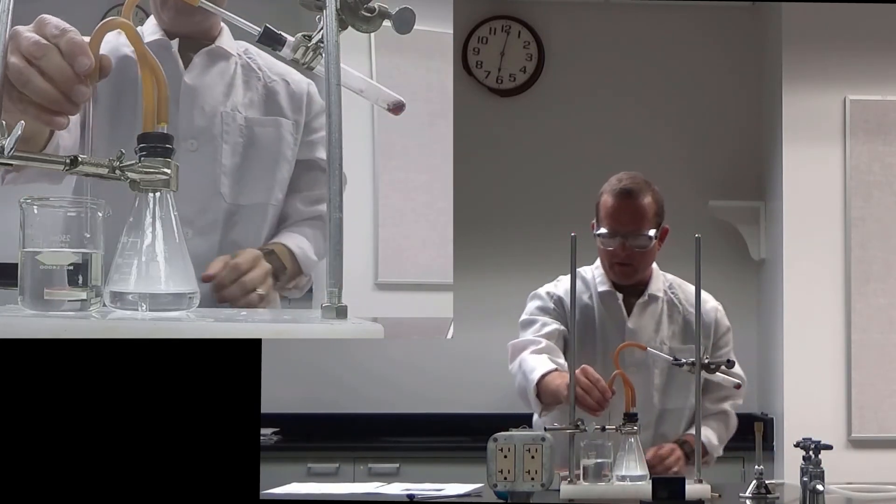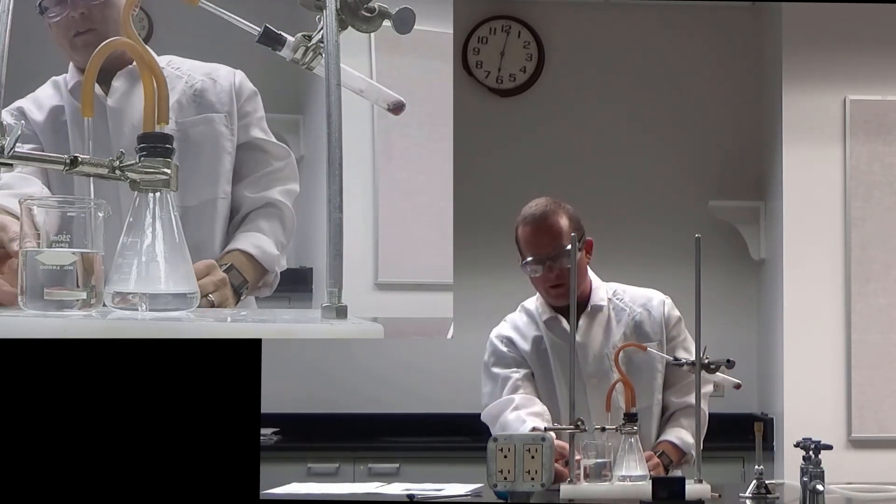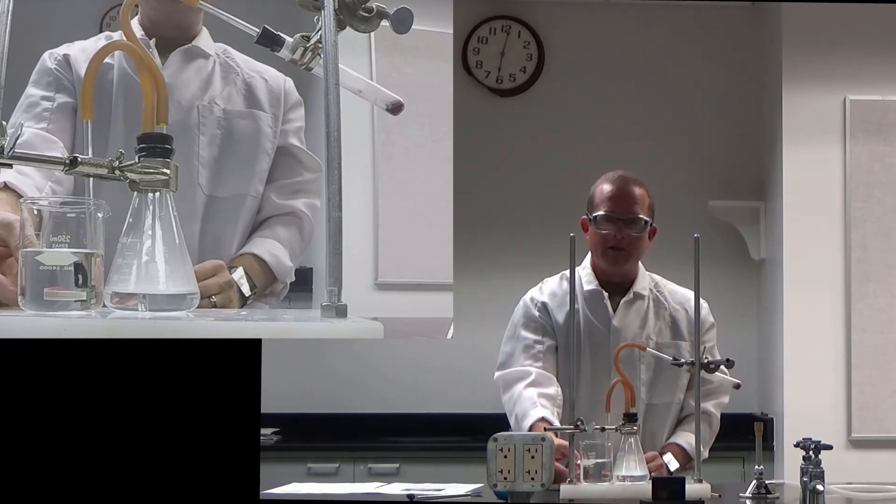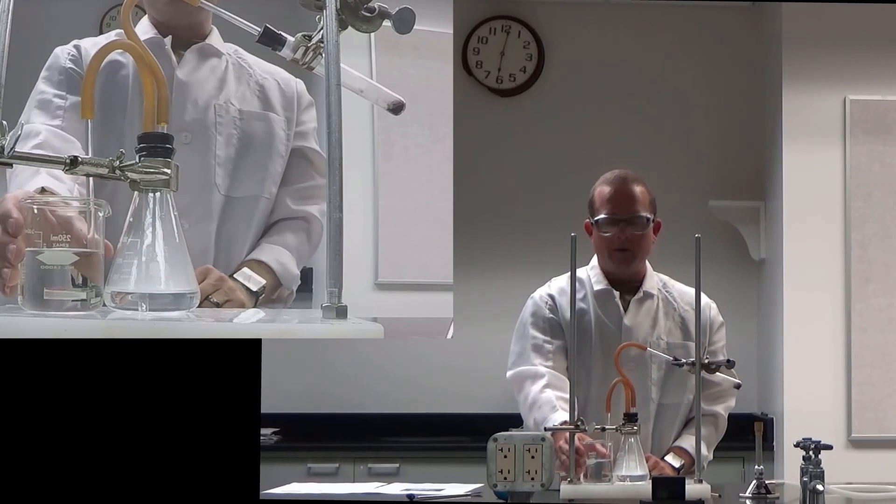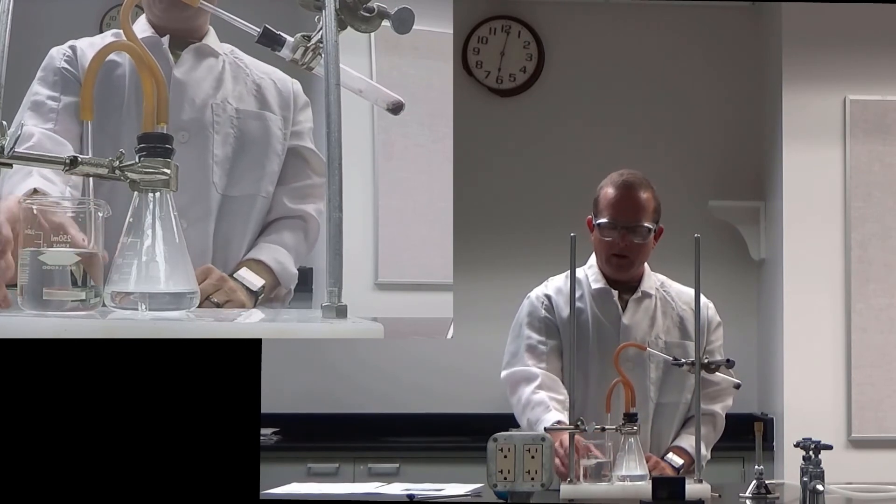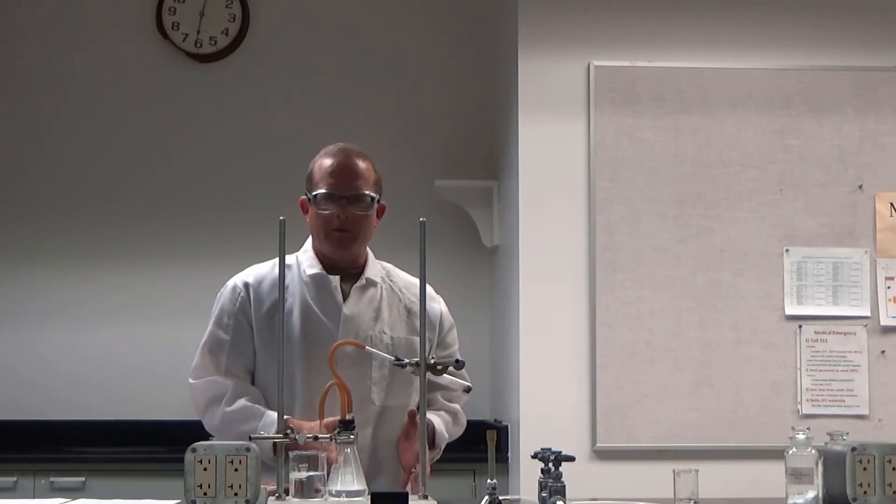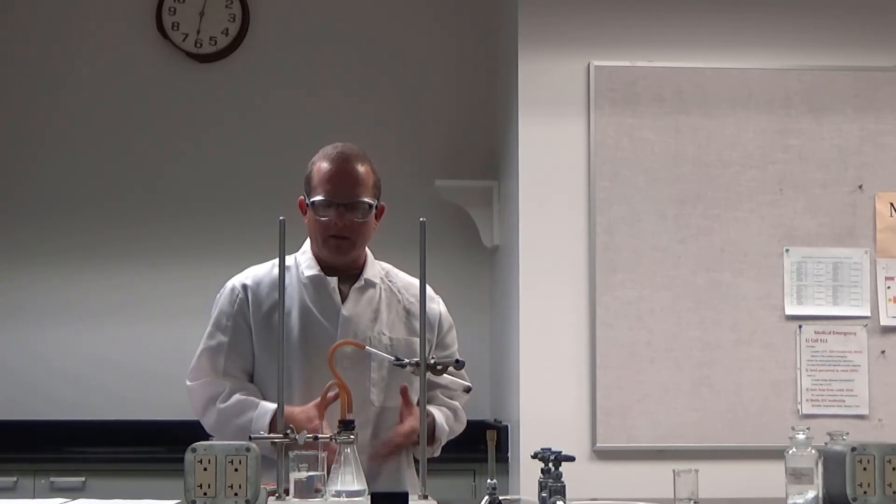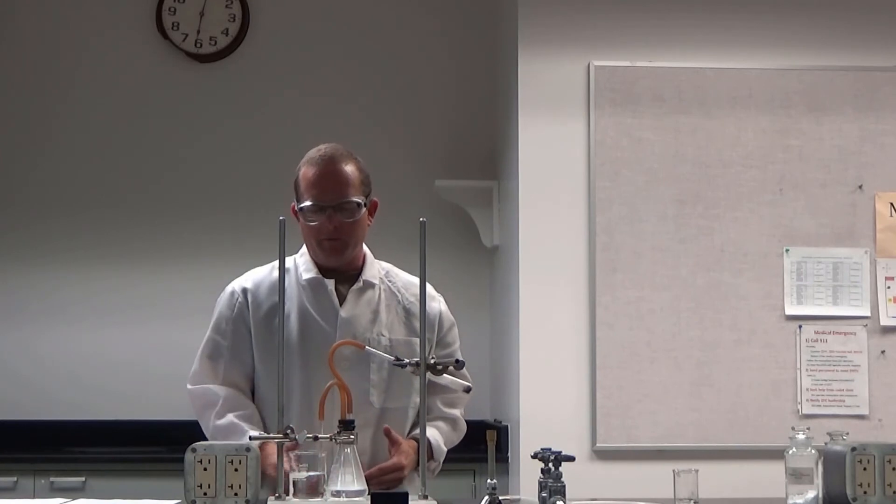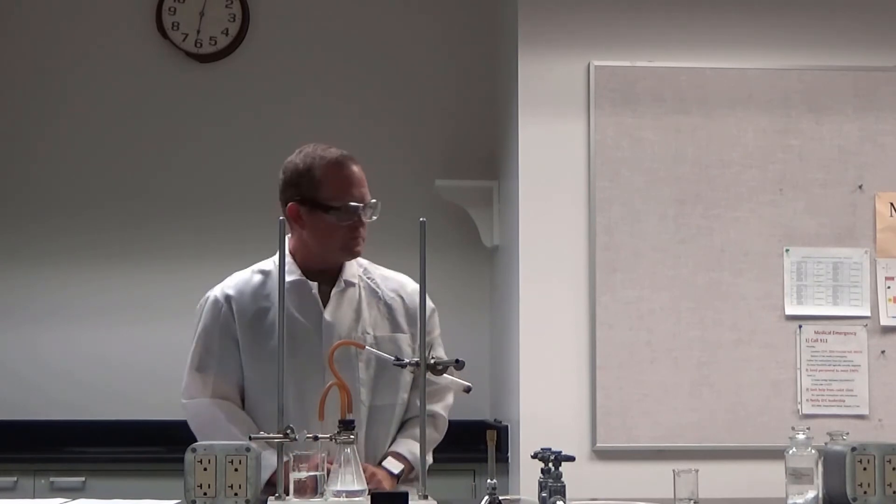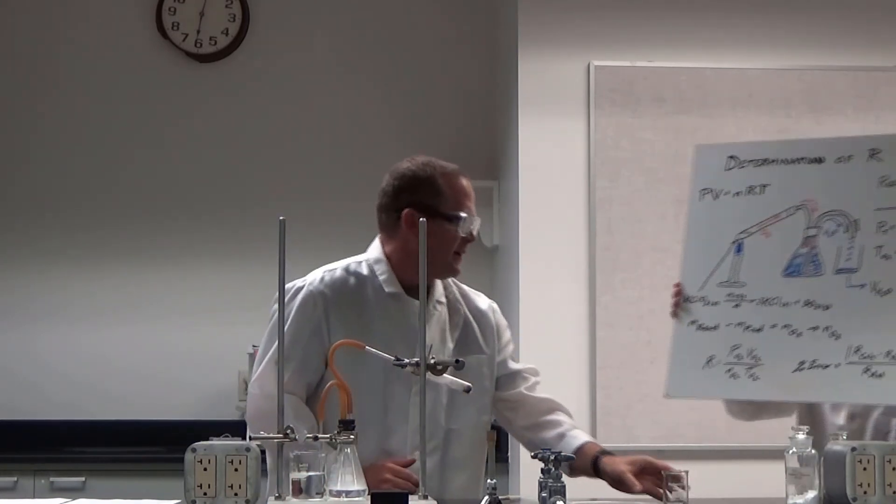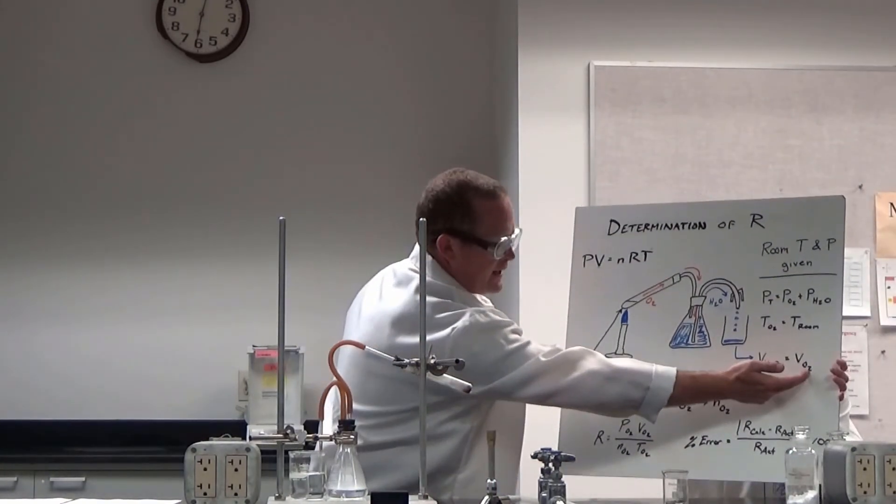And so the volume of water here is equivalent to the volume of oxygen that was generated by that reaction. So now we can go ahead and mass the beaker again, calculate the mass of the water with the density given at the particular temperature that the lab is at. We can determine the volume of the water and that volume of water is equal to the volume of the oxygen gas. And so we have the volume of the oxygen gas.